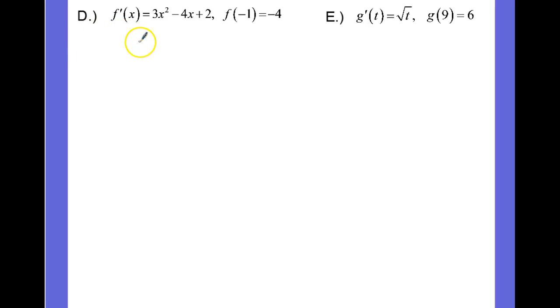In part D, we have f prime of x is 3x squared minus 4x plus 2, and so we will rewrite this as dy is equal to 3x squared minus 4x plus 2, all of that times dx.